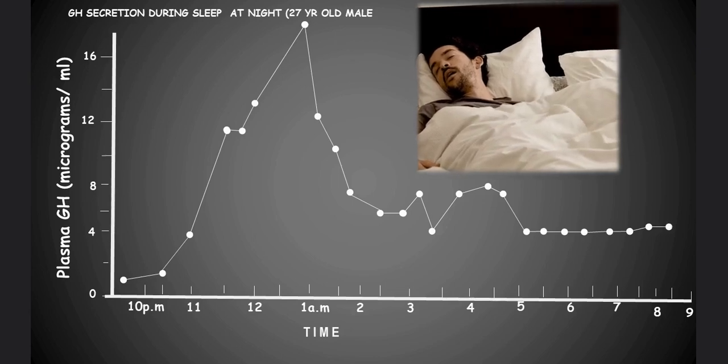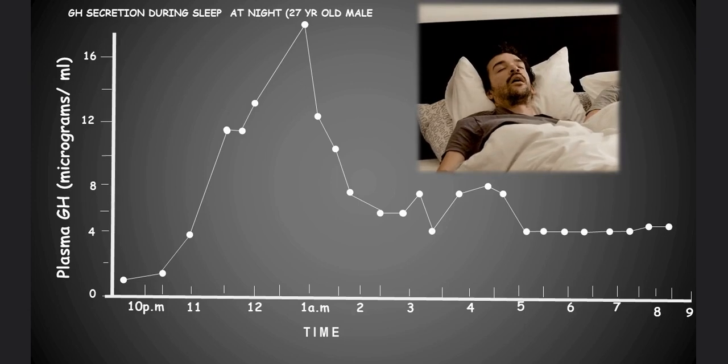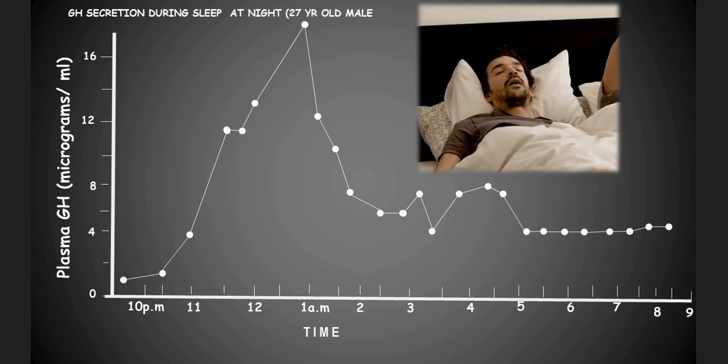Growth hormone secretion continued to peak and fall throughout the night though the initial peak that occurred within the first 90 minutes was greatest.